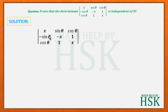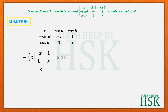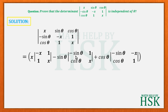Expanding along row 1, we get: x times the determinant obtained by removing the first row and first column, that is |x, 1; 1, x|, minus sinθ times |-sinθ, 1; cosθ, x|, plus cosθ times |-sinθ, x; cosθ, 1|.